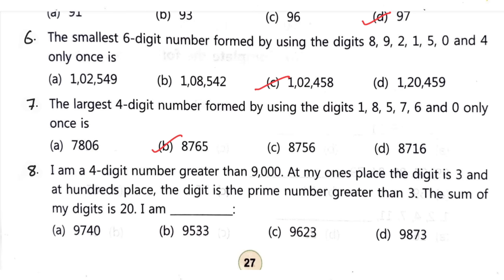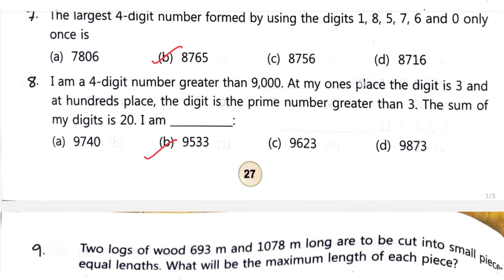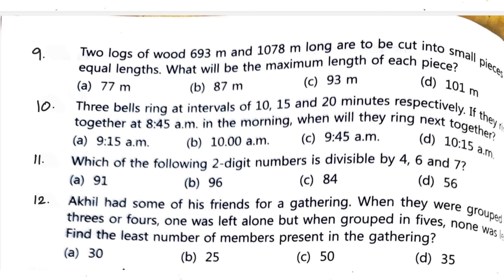Question number 8: I am a 4-digit number greater than 9000. At my ones place the digit is 3 and at 100 place the digit is prime number greater than 3. The sum of my digits is 20. Correct option is B, 9533. Question number 9: two logs of wood 693 meter and 1078 meter long are to be cut into small pieces of equal length. What will be the maximum length of each piece? Correct option is option A, 77 meter.